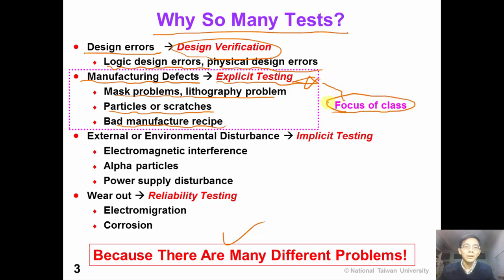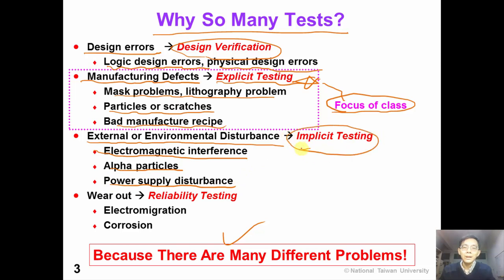We will go into details of explicit testing for the rest of this video. During functional operation, we can have external or environmental disturbance, such as electromagnetic interference, alpha particles, power supply disturbance, and so on. To detect this disturbance problem, we will need implicit testing or online testing.